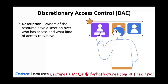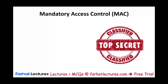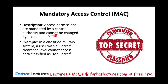With discretionary access control, owners of the resource have discretion over who has access and what kind of access they have. A user can create a file and grant read or write access to other specific users — they can give it or take it away. Usually these are admin people. With mandatory access control, permissions are mandated by a central authority and cannot be changed by the user. For example, when the government has top secret information, you cannot access it without the proper clearance level. In a classified military system, a user with a secret clearance level cannot access top secret information — that's it, you are prohibited.